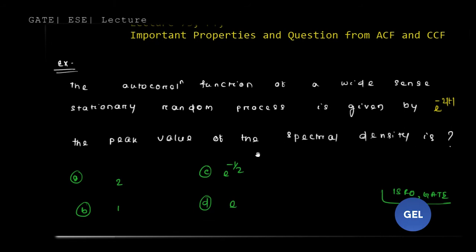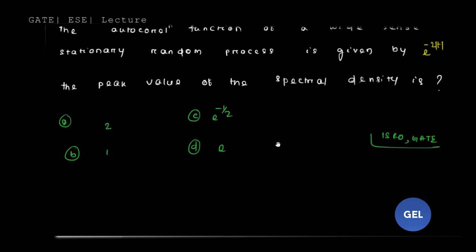This was a question asked in ISRO 2015: the autocorrelation function of a wide sense stationary random process is given by e to the power minus 2 mod t, and the peak value of the spectral density is how much? While solving this question we will come up with eight very important properties of the autocorrelation function, which will be beneficial for your GATE and engineering service exams.